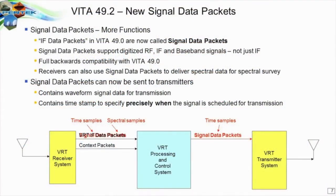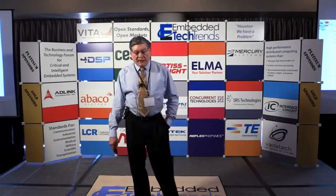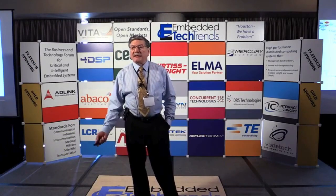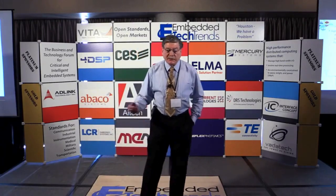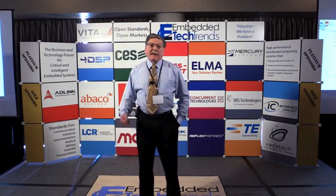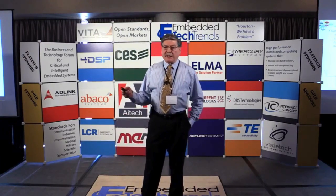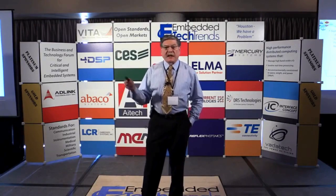Vita 49.2 adds a lot to the very popular Vita 49.0. First, IF data packets in 49.0 are being replaced with signal data packets — more generic. Now you can move not only receiver data, but different types of data: wideband IF and baseband, not just the IF from 49.0. The standard maintains backward compatibility so old packets still work. It also adds the ability to transfer spectral data as a signal instead of just IF or RF data.